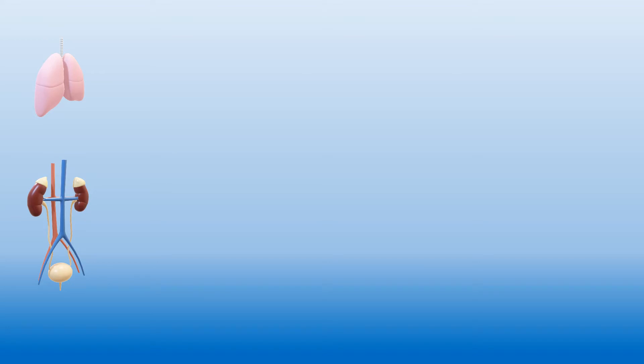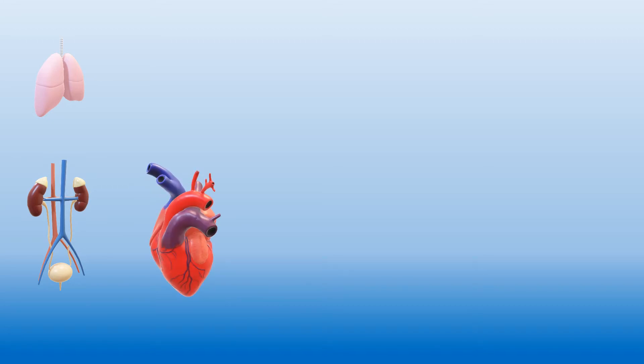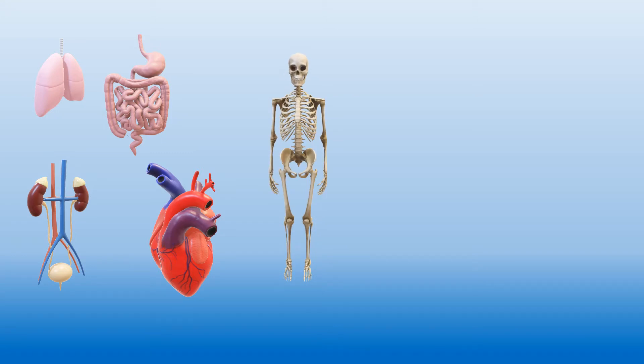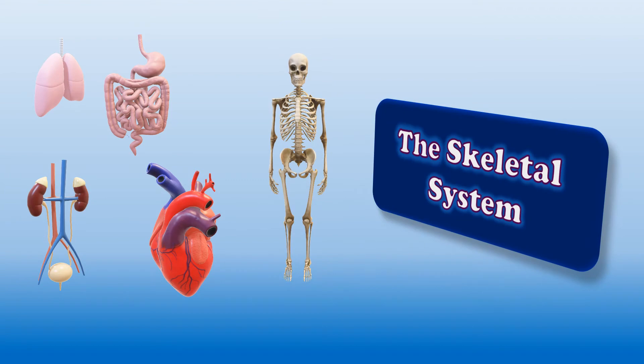Good morning children. This is our science period. We all know that our body is made up of different parts, and each part is responsible for a different function. For example, lungs are responsible for respiration, kidneys for excretion, heart for blood circulation, digestive system for digestion, and the nervous system for sending and receiving messages. The skeletal system is responsible for giving shape and strength to our body. In today's class we are going to learn about the skeletal system.